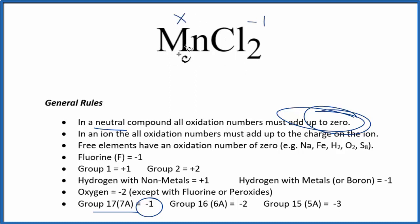Let's call Mn X, and we'll say X plus, we have two chlorine atoms, and each one is minus 1. That'll equal zero. So X minus 2 equals 0, X equals 2, so positive 2.